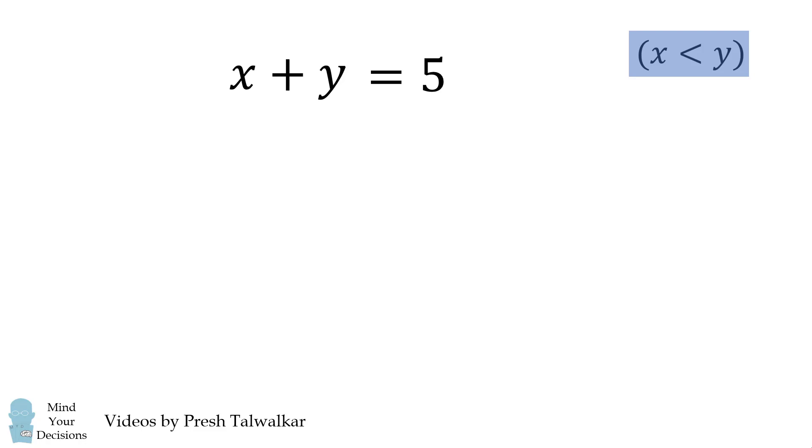Now, given that x is less than y, there are three possibilities. We could have 0 plus 5 is equal to 5, 1 plus 4 is equal to 5, or 2 plus 3 is equal to 5. We'll consider each case.